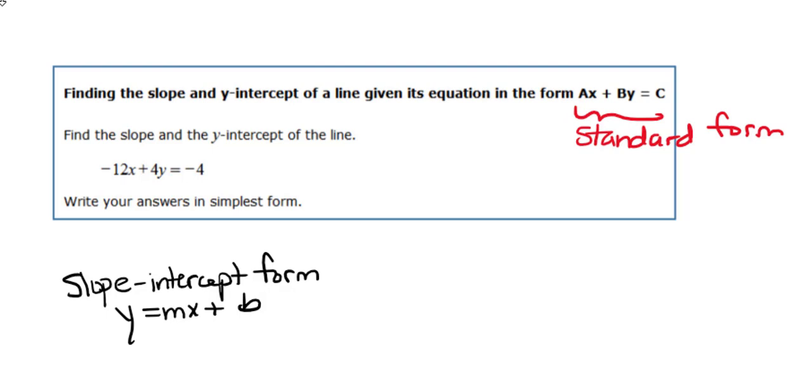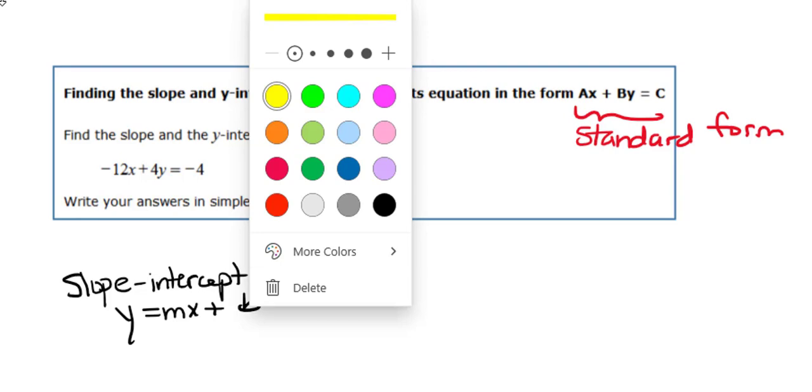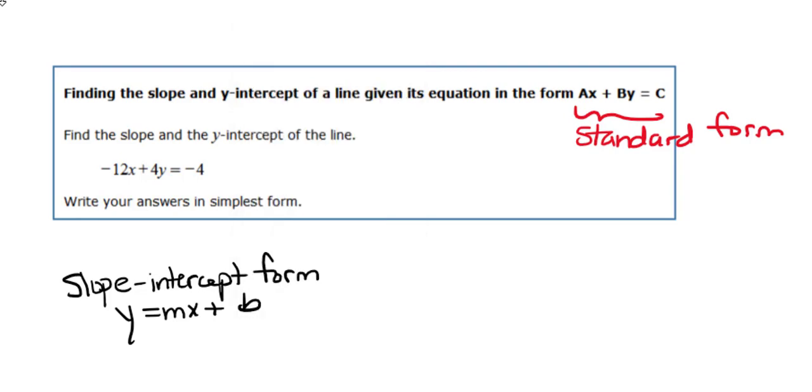If we're looking for the slope and y-intercept, we want to get the y by itself and rearrange into what's known as slope-intercept form, y equals mx plus b, where m is the slope and b is the y-intercept.